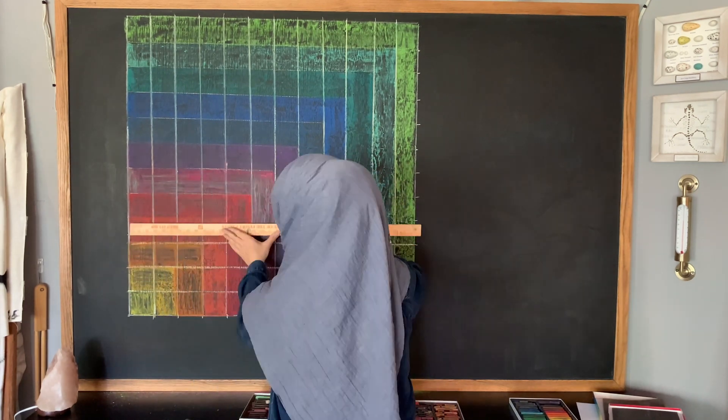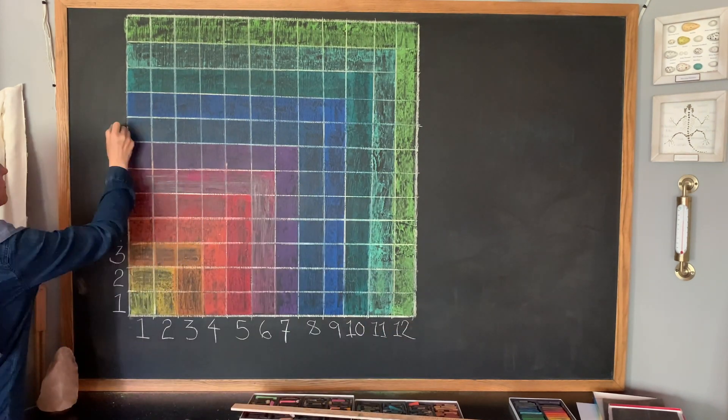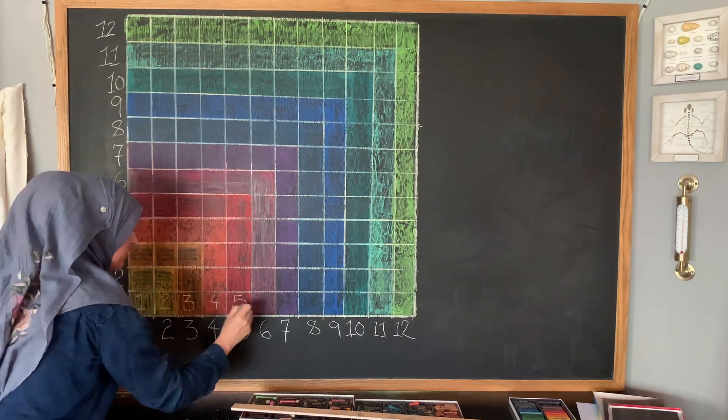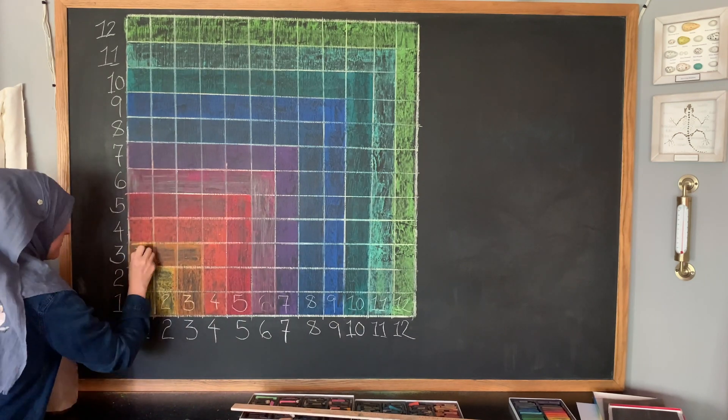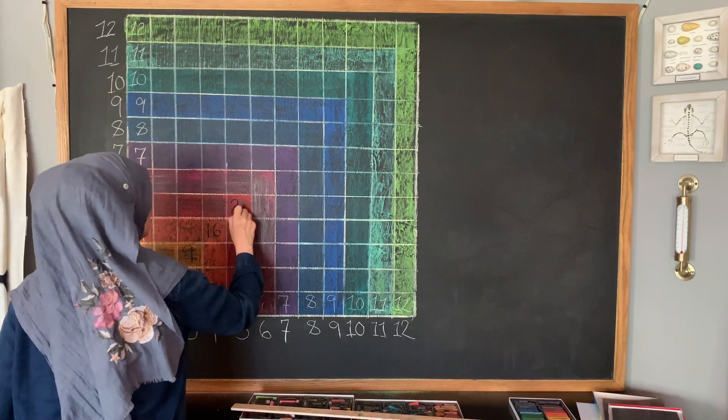So once I get all the color in it's time to go back over with the chalk to make the grid again because that got absorbed into the colors once I put the colors down and then we need to actually fill in our times table.